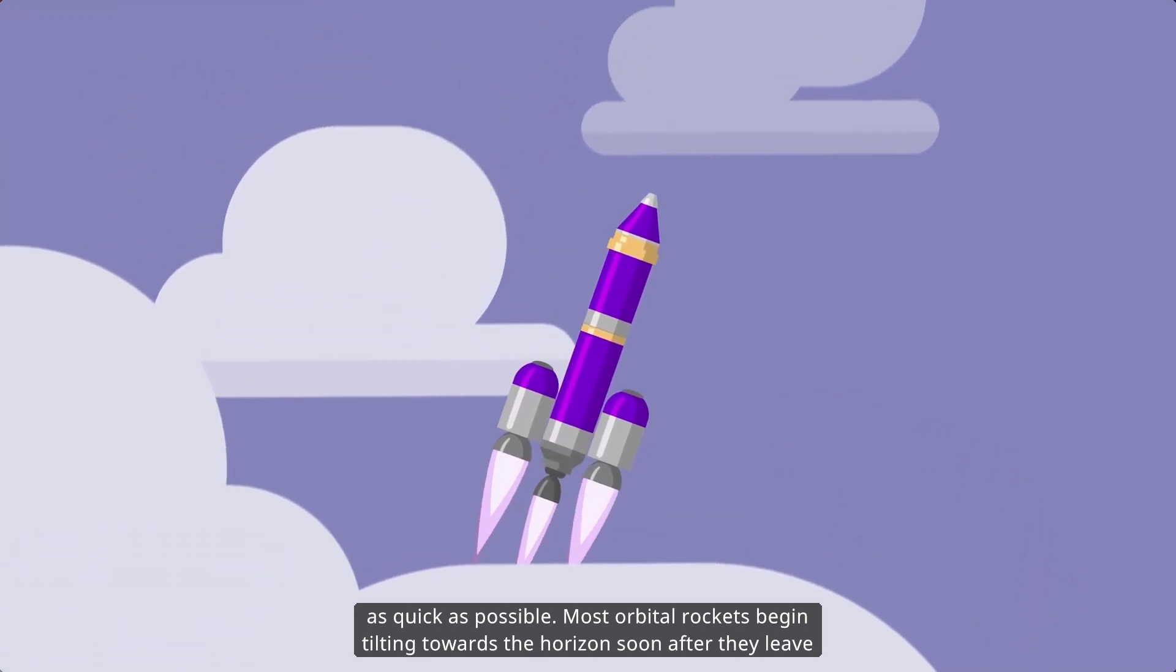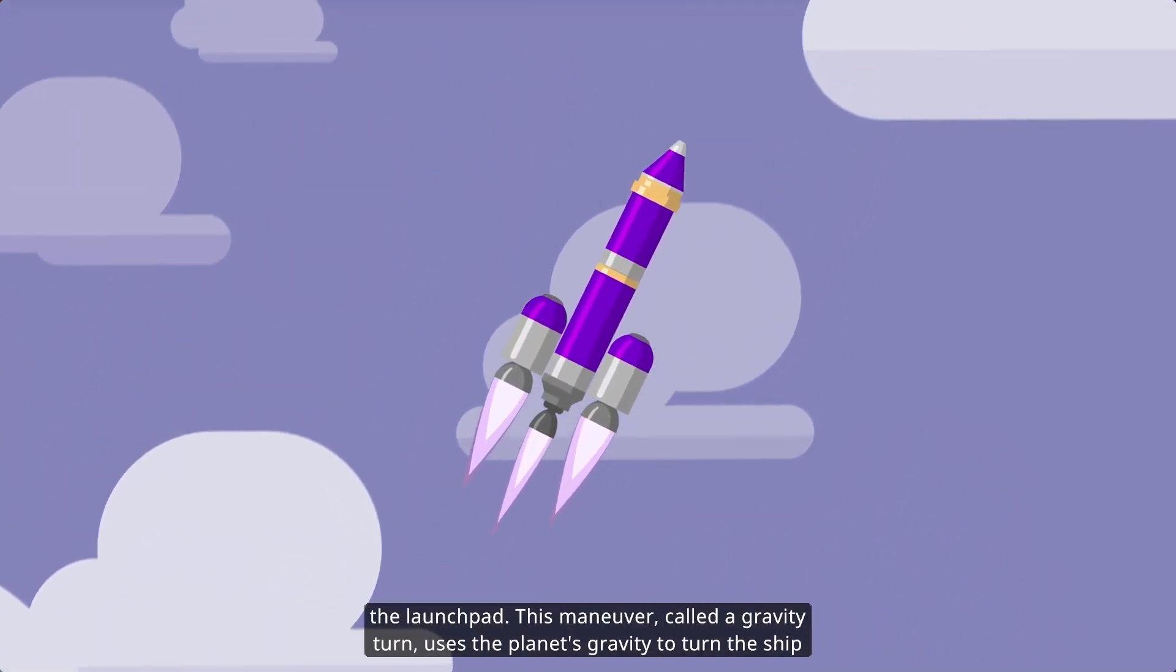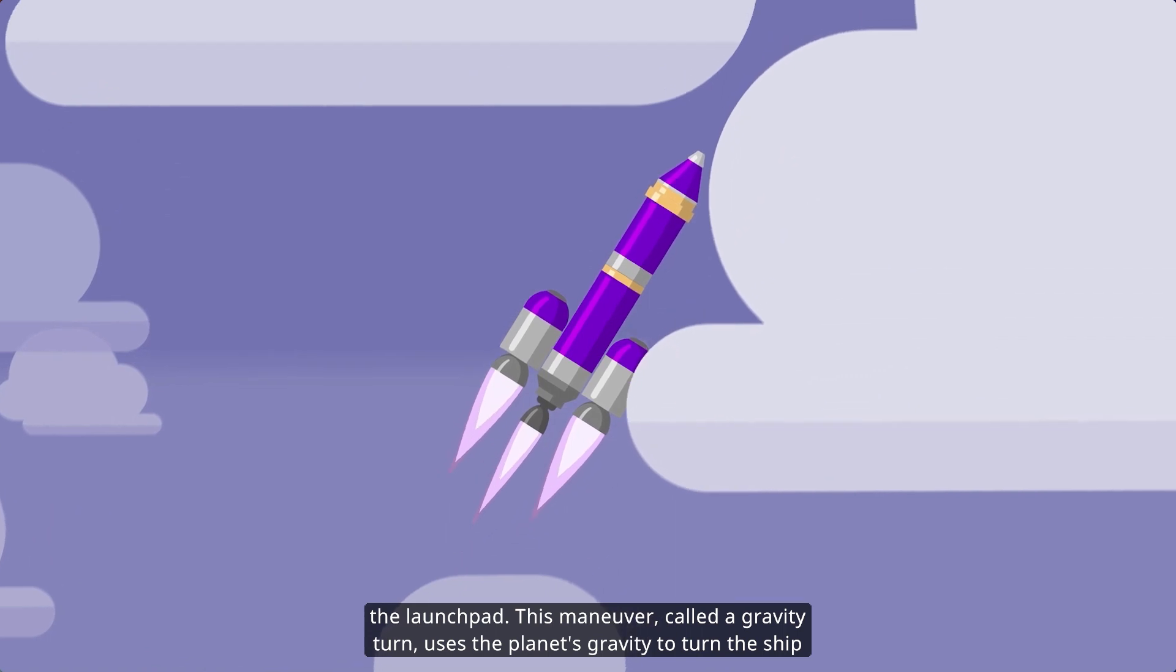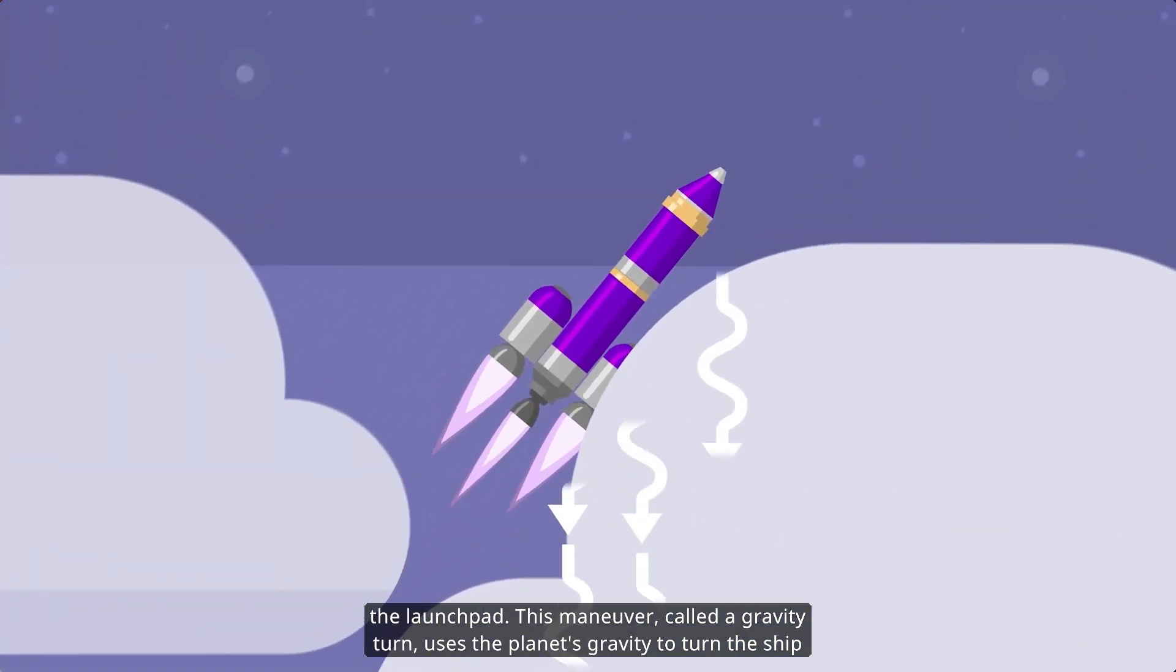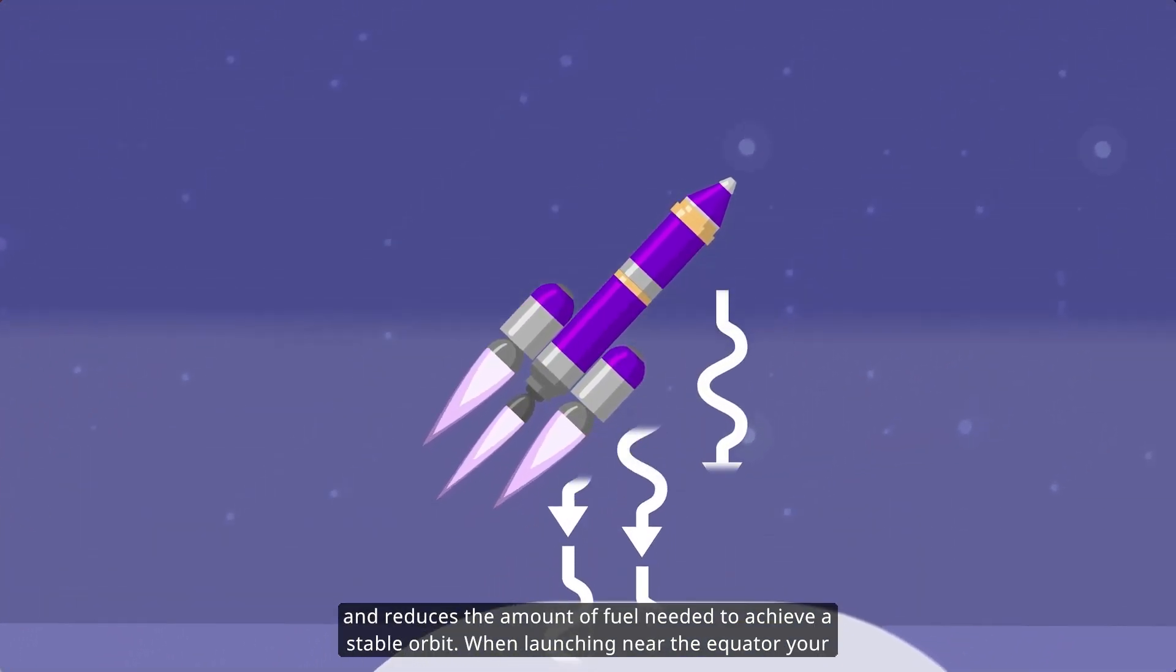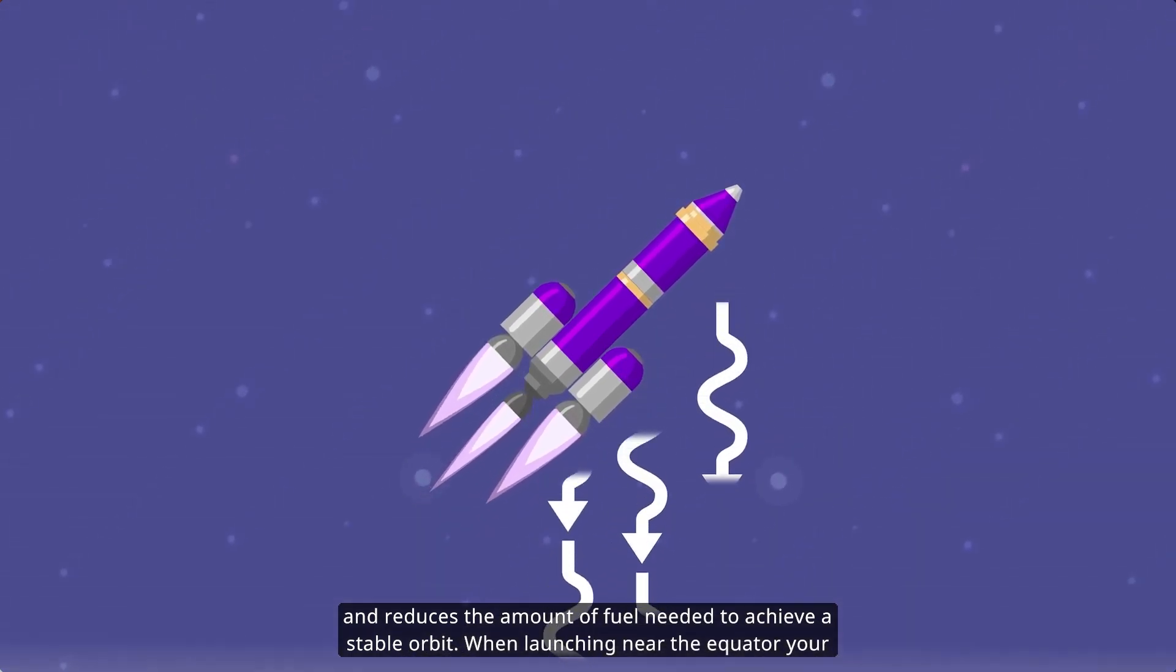Most orbital rockets begin tilting toward the horizon soon after they leave the launch pad. This maneuver, called a gravity turn, uses the planet's gravity to turn the ship and reduces the amount of fuel needed to achieve a stable orbit.